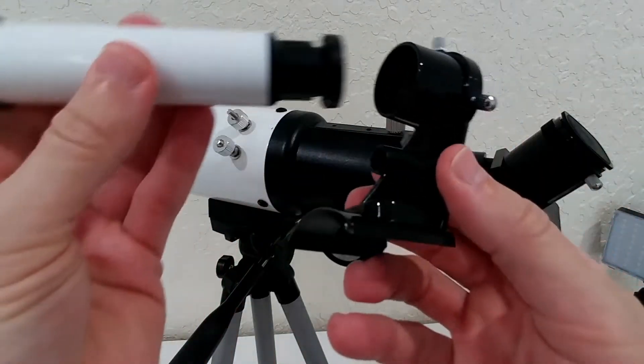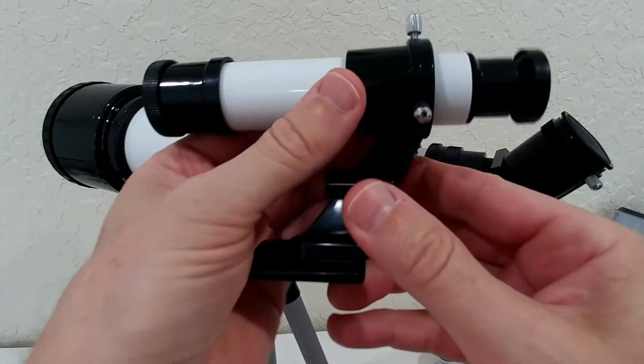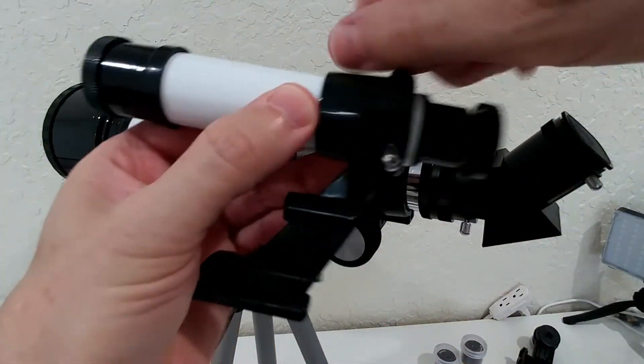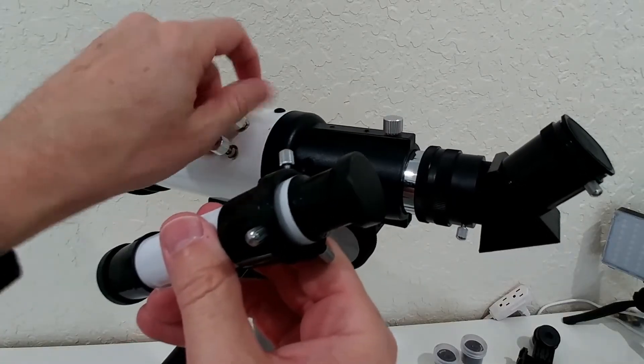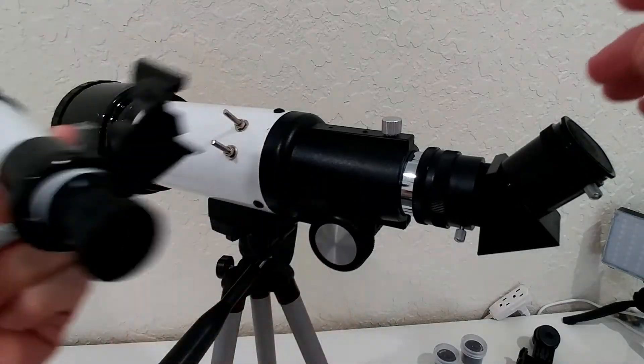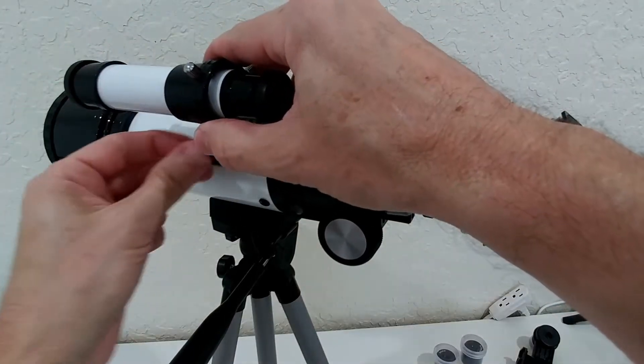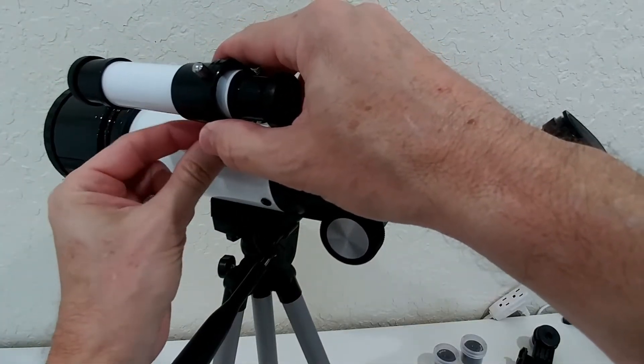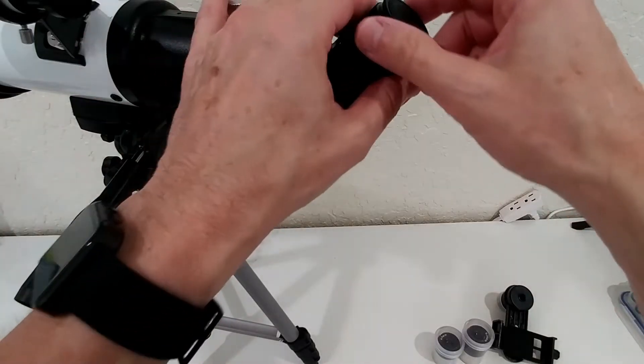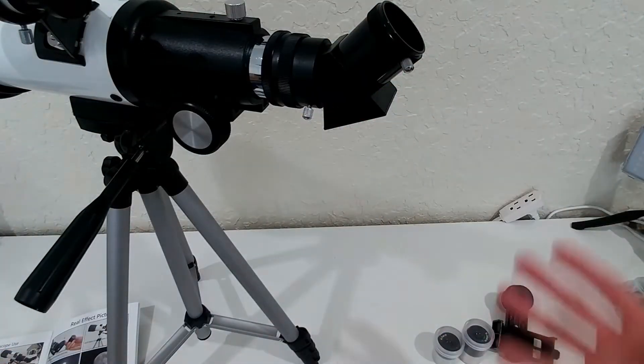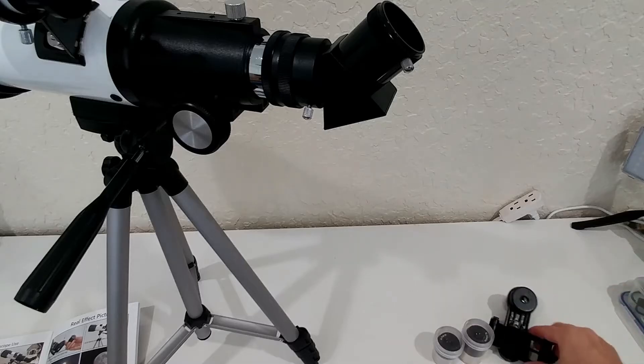Now next piece is the viewfinder. We need these two pieces, we have to put this through here and then secure with these screws. Then we remove these two screws here, just put this viewfinder on top here and secure it again with these nuts. And now we are actually almost ready, we just have to add now the eyepiece or the mobile phone holder depending on our needs.